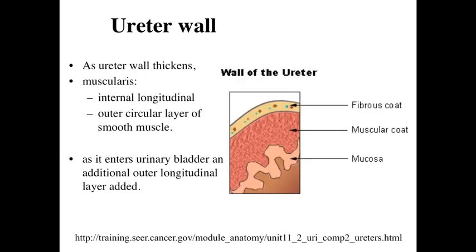If we take a look at the ureter wall, as we get closer and closer to the bladder, our ureter wall is gradually going to be thickened, and ultimately it's going to go continuously into the urinary bladder, where that muscularis is going to be continuous with the muscularis surrounding our urinary bladder.